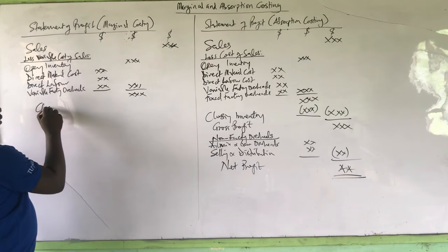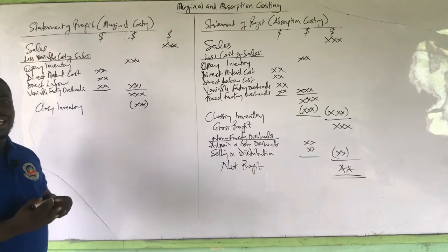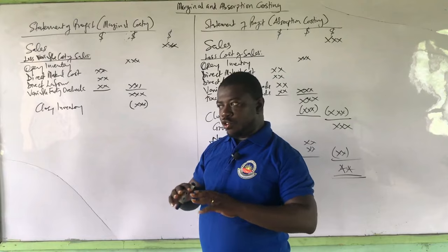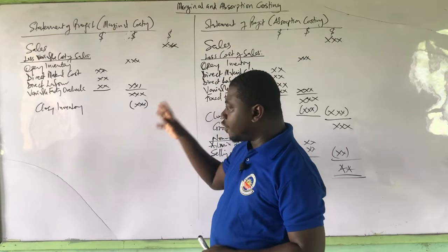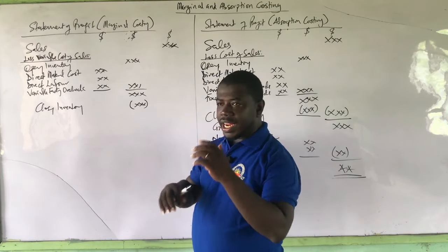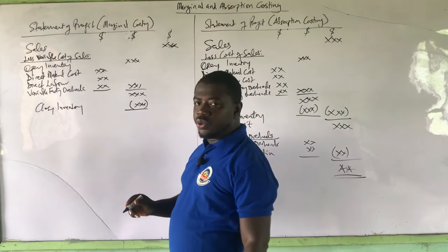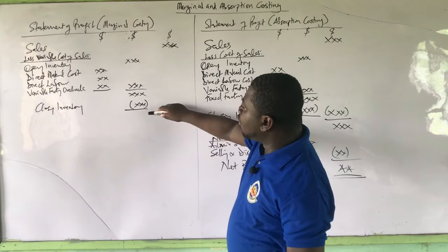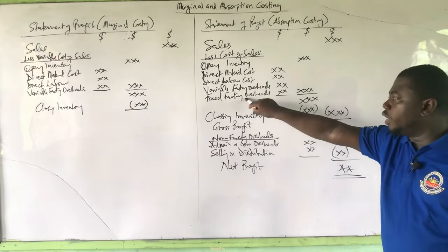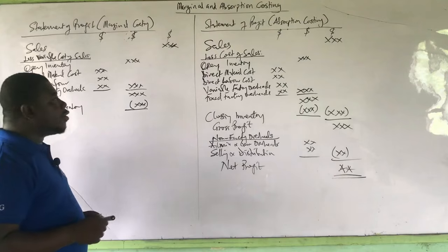Marginal costing is interested in taking out all variable cost from the sales to arrive at contribution — not gross profit. We are interested in getting the contribution, and to get the contribution we need to take out variable cost from sales. So there is no need to include fixed factory overheads in the calculation of your cost of production. That is why we call it the marginal cost of sales. After adding the variable production cost components to the opening inventory to get cost of goods available for sale, we then take out the closing inventory — valued based on the marginal costing valuation — to get the marginal cost of sales.